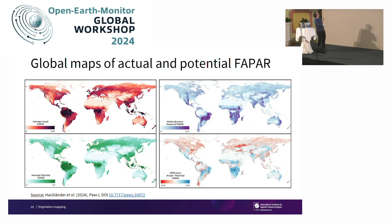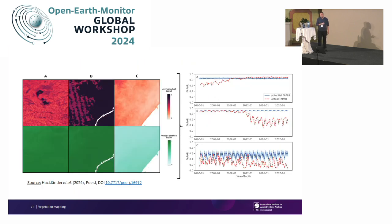What you get out of it are global maps — this is just an average map over the whole period — of the actual FAPAR, the potential FAPAR, as well as the deviance and the difference between them. It works quite well, as you can see in three case studies from Brazil, Colombia, and Ethiopia. Summarized on the right is the time series where the blue line is the potential FAPAR, which stays relatively stable with exception of some photo-scientific fluctuations, and the red line is the actual FAPAR, driven for instance by land use changes in the Amazon. You can really see how these differentiated layers can be used for land potential assessments.